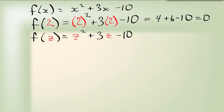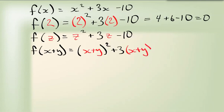It's a little more complicated when you look at something like f of x plus y. Because now we have to go x plus y squared plus 3 times x plus y minus 10. And once we multiply that all out, we end up with our function with respect to x plus y.